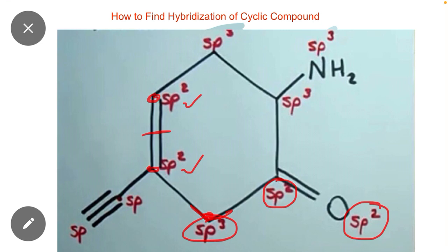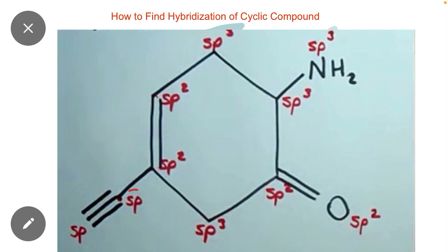This carbon and this carbon are attached via a double bond, so their hybridization will be sp2 and sp2. Here you can see that a triple bond is present. If one triple bond is present, hybridization will be sp, meaning both these carbons have sp hybridization.